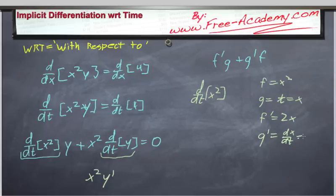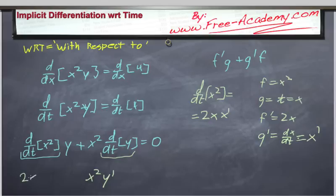This is one of those concepts that just comes with practice. Now we're going to put everything into our chain rule formula, and this will be 2x times x prime, which we can now put back into our formula to get 2x·x prime·y plus x squared·y prime, and that all equals 0. So we just did the derivative with respect to time of x squared times y.